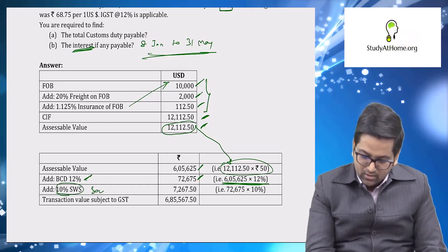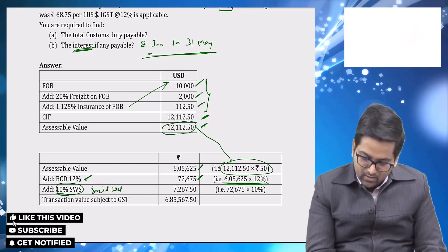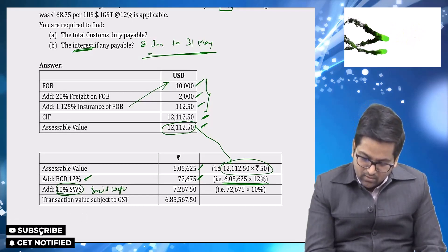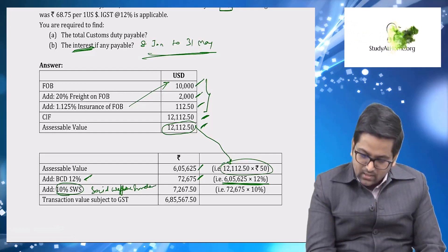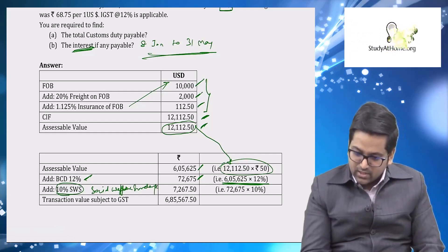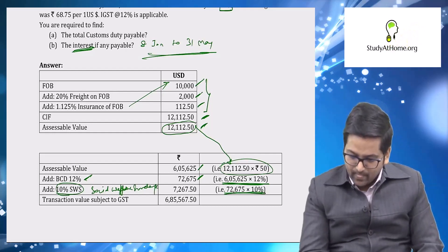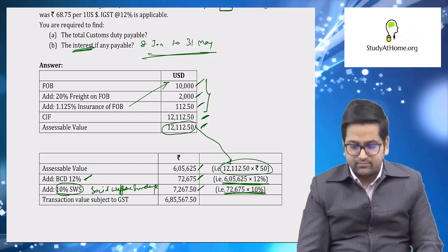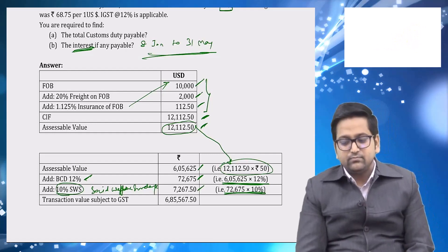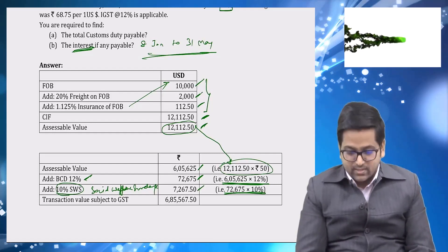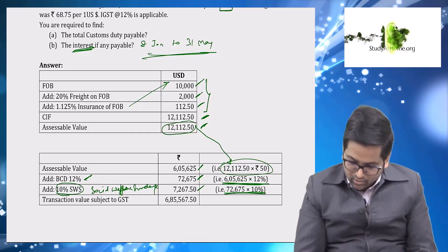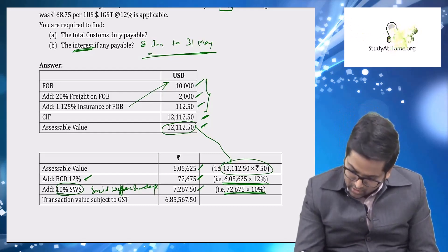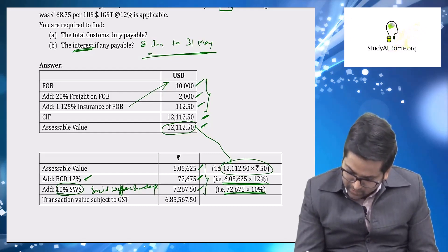Social welfare surcharge is levied at 10 percent. It is applied on BCD. So 10 percent on the BCD amount of ₹72,675 is calculated accordingly.